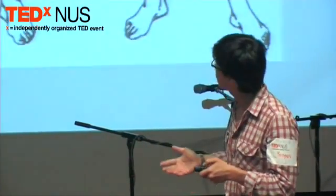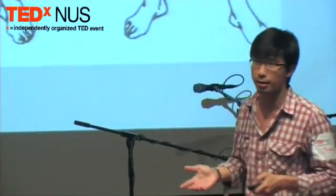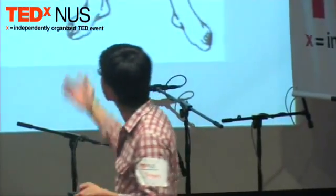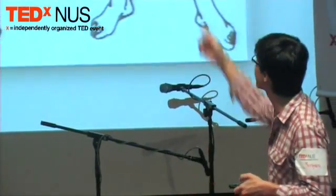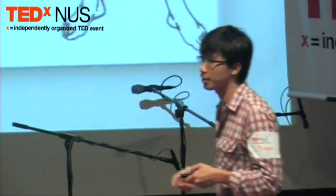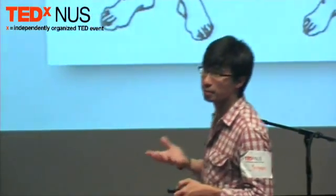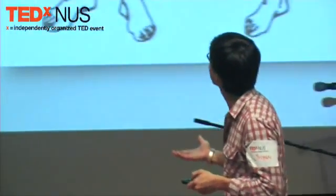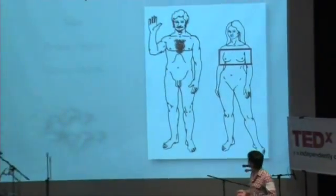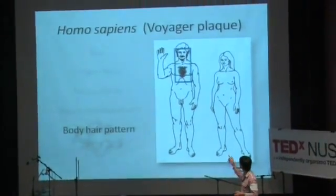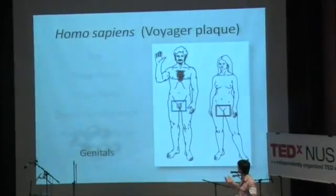Let's look at humans first. This is from the Voyager plaque — I had to make a few additions to show the different sexual dimorphisms in humans. First we have body size: males are bigger. Proportions: women tend to be more slender. Muscularity, breast development, body hair patterns, and the genitals.